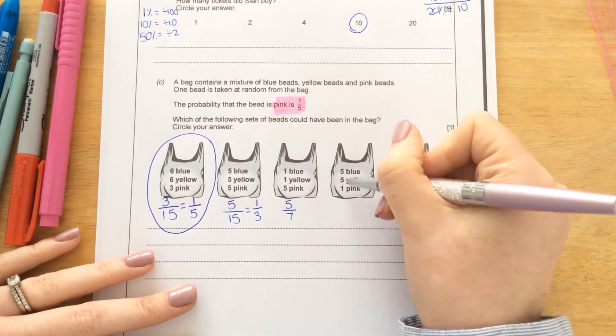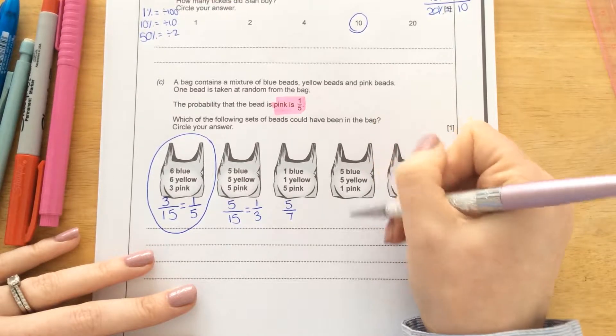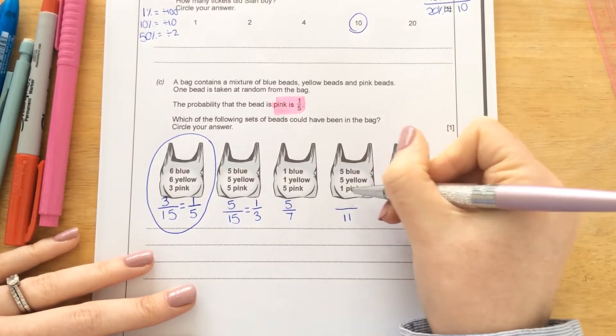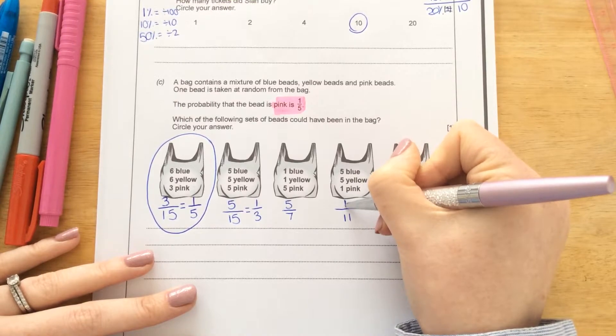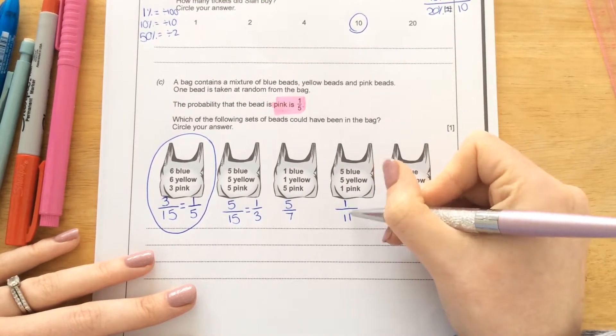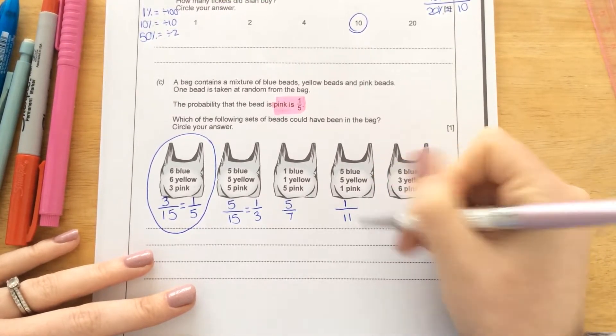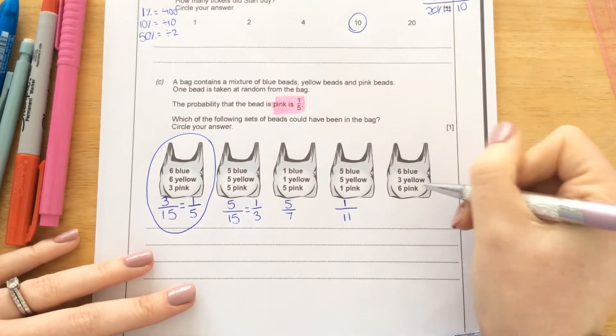This one, we've got 5, 10, 11 beads in total. And 1 pink bead. Again, there's nothing that goes into both 1 and 11. So that's the smallest it could possibly be.